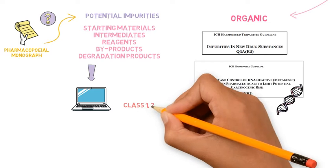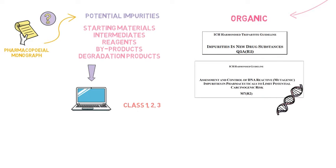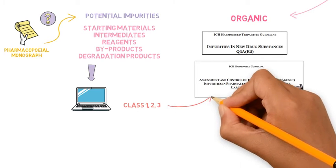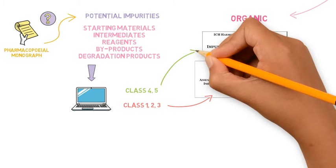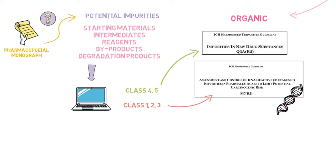classes 1, 2, or 3, need to have their limits defined based on ICH M7, while classes 4 and 5 impurities are considered non-mutagenic and controlled based on ICH Q3A. To know more about ICH M7, there is a specific video about this topic here in the channel.